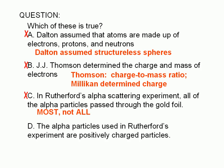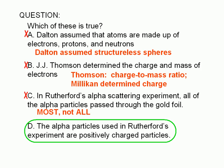Choice D is true. Alpha particles are positively charged — in fact, each one consists of two protons and two neutrons, essentially a helium atom that has been stripped of its electrons. The back-scattering of alpha particles suggested that the nuclei in the gold atoms are positively charged, since like charges repel.